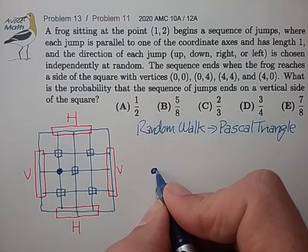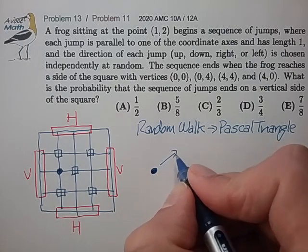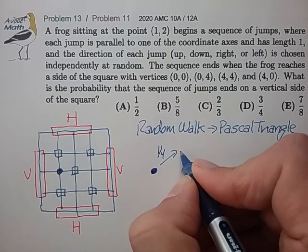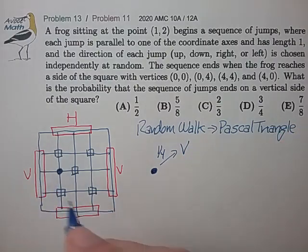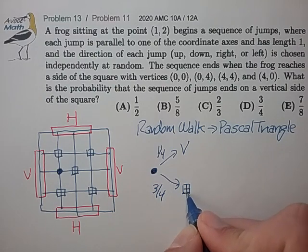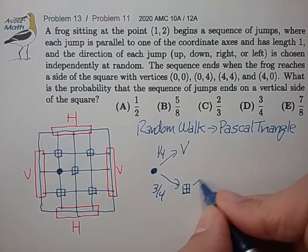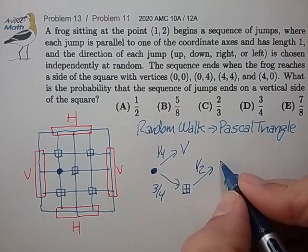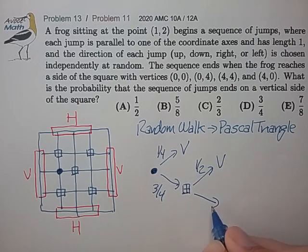So starting with our starting point, there's a one-quarter chance that we could finish on the very first jump. We're just going to make a jump to the left. And there's a three-quarter probability that we're going to end up on a symmetric point, which is easy to calculate. And from the symmetric point, there's a one-half probability of ending up on a vertical and a one-half probability of ending up on the horizontal.